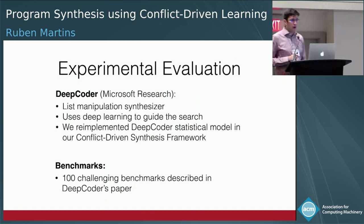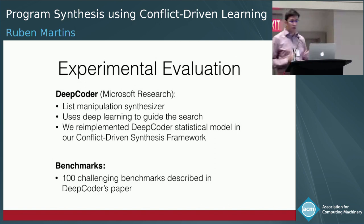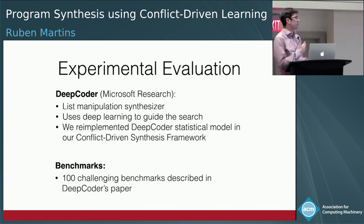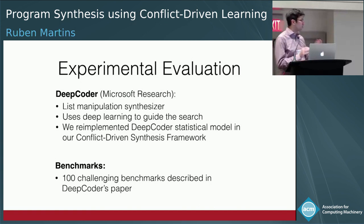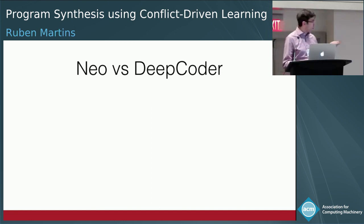For experimental evaluation, we evaluated our framework — called NEO — in two domains: list and table manipulation. Here I'll show the list domain. We compare against DeepCoder, a list manipulation synthesizer from Microsoft Research that uses deep learning to guide search. Since DeepCoder is not publicly available, we re-implemented their statistical model in our framework with close collaboration with the authors. We used the 100 most challenging benchmarks from their paper.